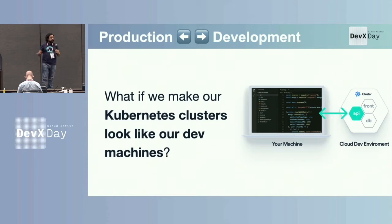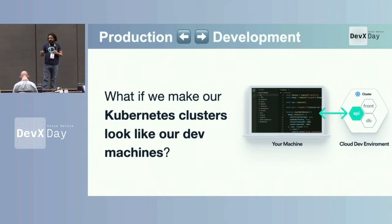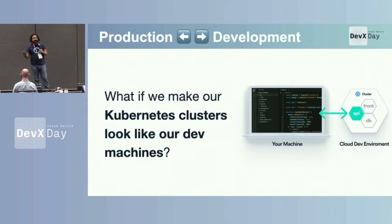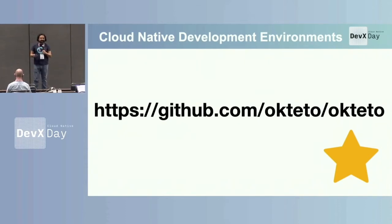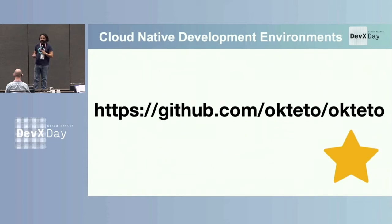It doesn't matter if it's not realistic. It doesn't matter if it's on demand. Developers value speed a lot more than any other sort of comfort. That's something interesting and one of the things that has been guiding a lot of the work we've been doing. So as we spoke with all these organizations, we kept thinking about this question: instead of forcing our local machine to look like a cluster, what if we just do the opposite — what if we make our dev clusters behave like our dev machines? This is the question that made us start the open source project called Okteto, at github.com/okteto. If you're interested in dev experience and dev environments, star it, follow it — it's a community effort.